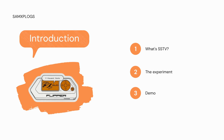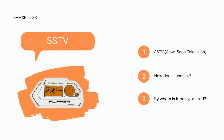SSTV means Slow Scan Television. It is a method of transmitting still images over radio waves. It was originally developed for use in the early days of television, back when live video transmission was not yet practical.